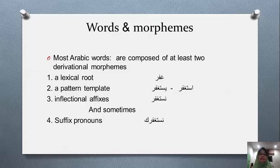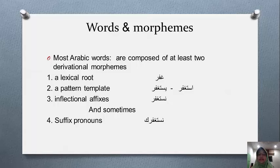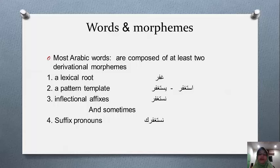On top of the lexical root and the pattern template, which represents a derivational morpheme, we can also add inflectional affixes to the verb. So 'istaghfara' is past tense, and 'yastaghfiru' is present tense. Now 'nastaghfiru' — the 'na' here is a pronoun morpheme meaning 'we', so 'nastaghfiru' means 'we seek forgiveness'. We can also add suffix pronouns at the end, like 'nastaghfiru-ka' — 'ka' means 'you' — so 'nastaghfiru-ka' means 'we seek your forgiveness'.